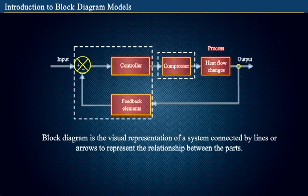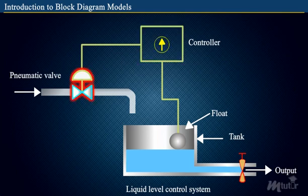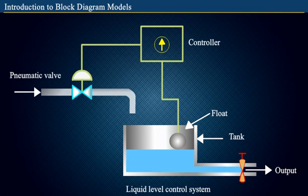For instance, let's consider a liquid level system that consists of a controller, pneumatic valve, tank, float, and an output. In this control system, the level of the water is sensed by the float and the position of the float acts as feedback. According to the float position, the pneumatic valve is operated.